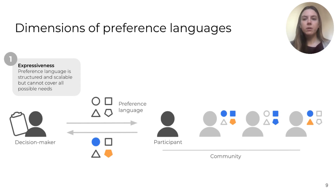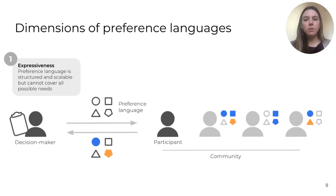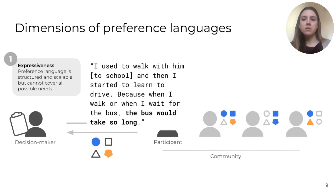Expressiveness refers to the fidelity with which the preference language can express a person's preferences. Preference languages are designed to be structured so that they can scale to large groups of people. However, this means that it is not possible to express every detail of every person's needs and goals. Expressiveness becomes a potential problem when a preference language is more expressive for some stakeholders than for others. For instance, in the student assignment setting, most families want a school that will offer high-quality education and resources to their child. However, because of historical inequality in education, such a school is not practically available to every student — for example, because of transportation constraints. One parent we interviewed actually learned to drive because the bus took too long to take her son to the school she wanted him to attend.